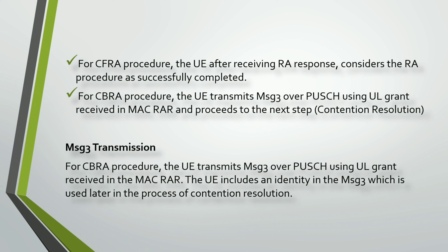The RA response received from the network includes a few key parameters: the RAPID (Random Access Preamble Identifier), detected by the RAR function; Timing Advance Command; UL grant; and Temporary C-RNTI (TC-RNTI). For CBRA procedure, the UE transmits Message 3 over PUSCH using the UL grant received in the MAC RAR, and includes an identifier in Message 3 which is used later for contention resolution in Message 4.